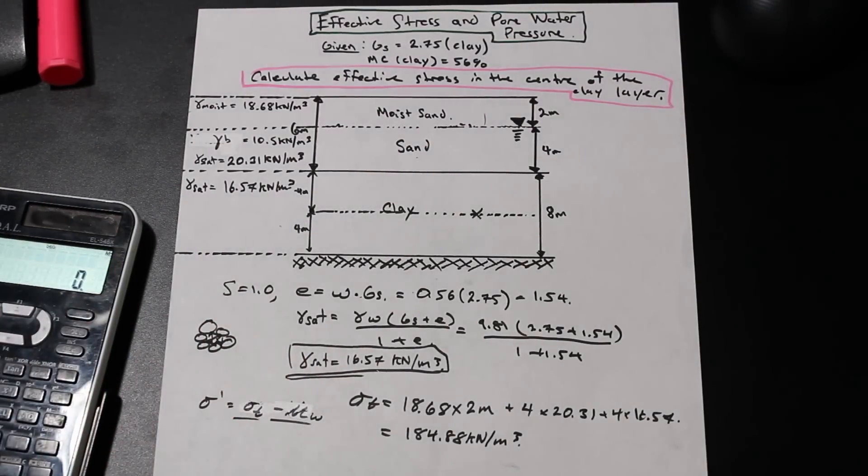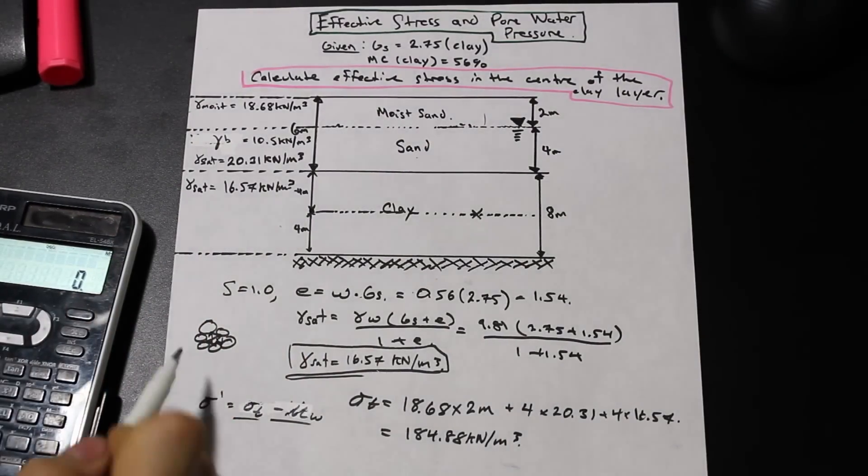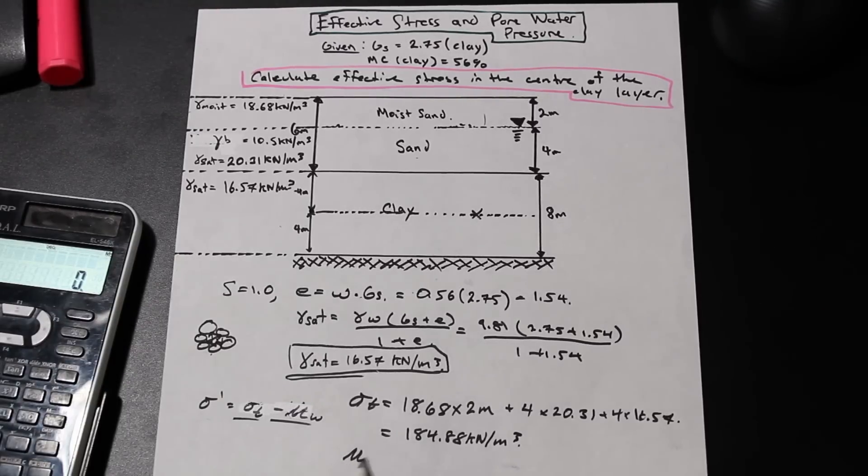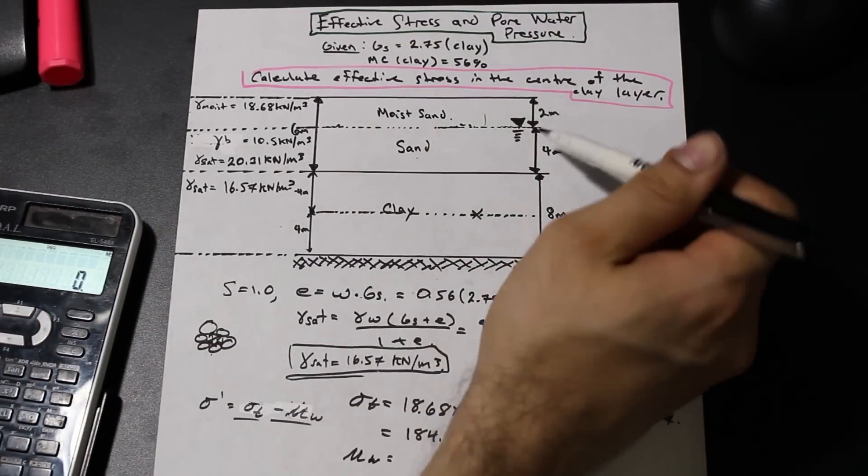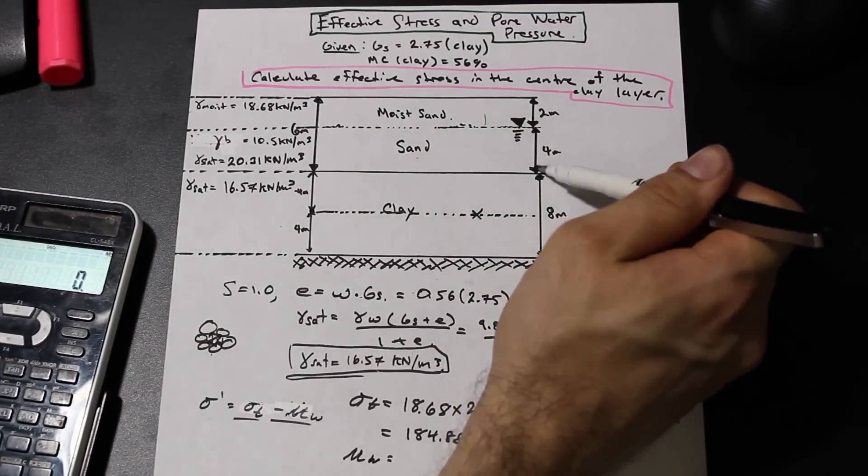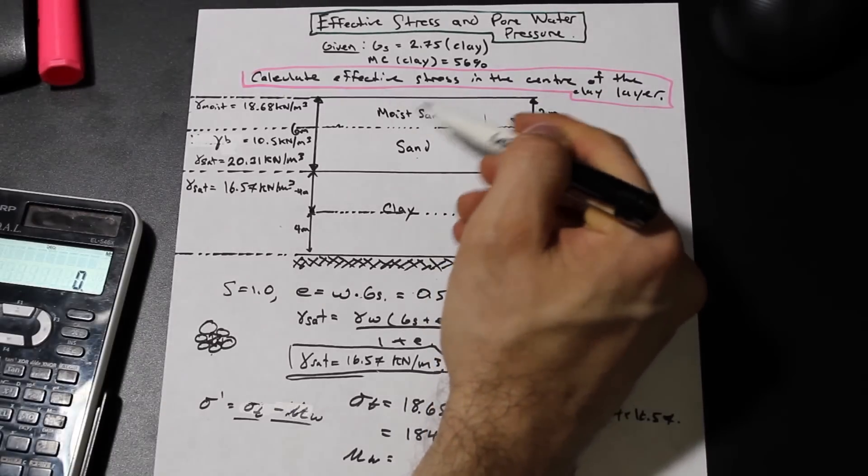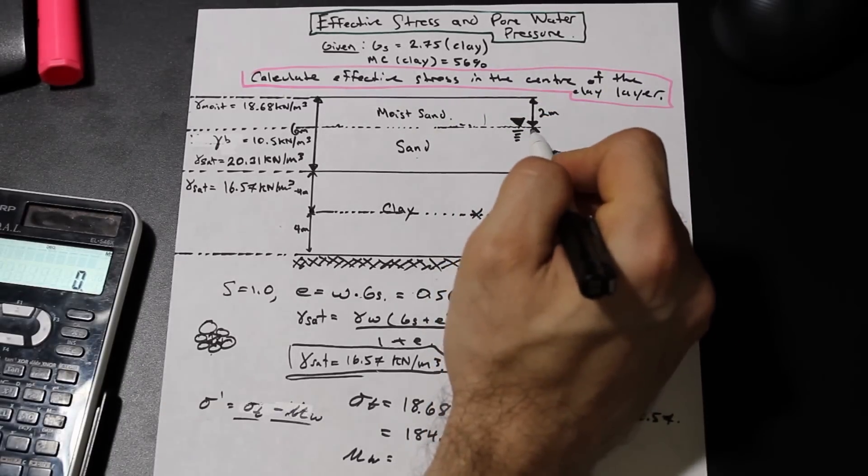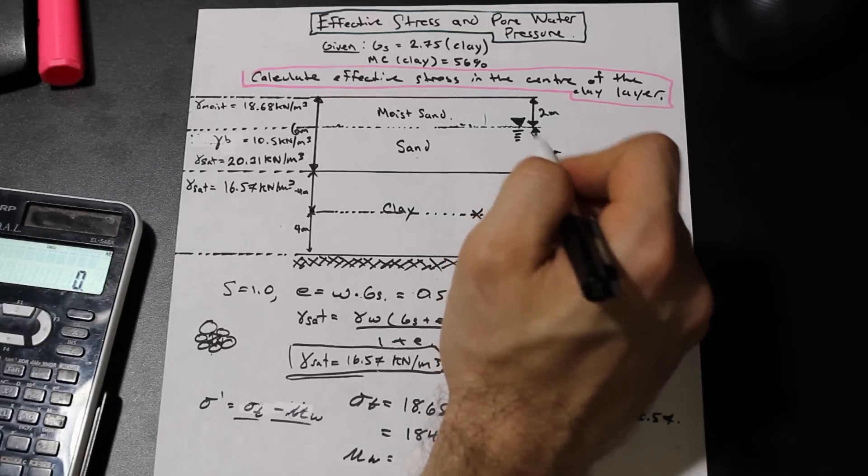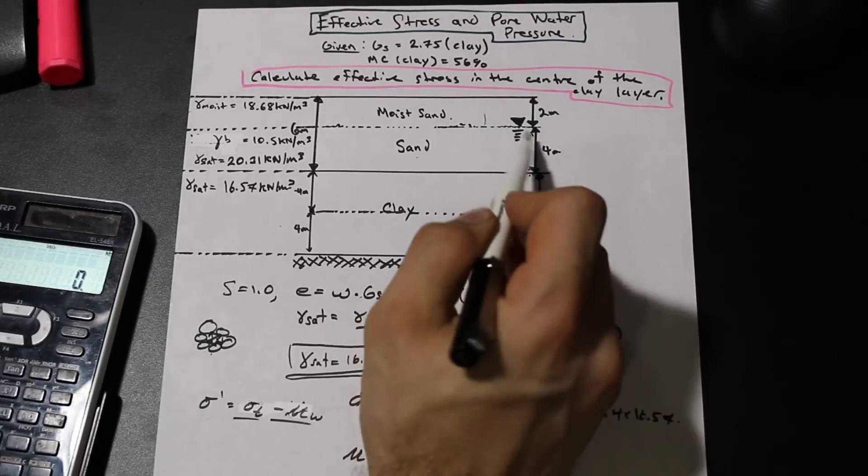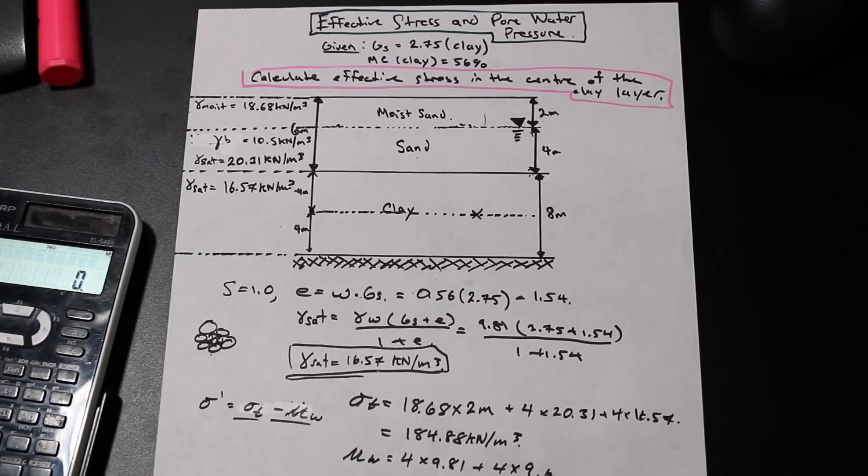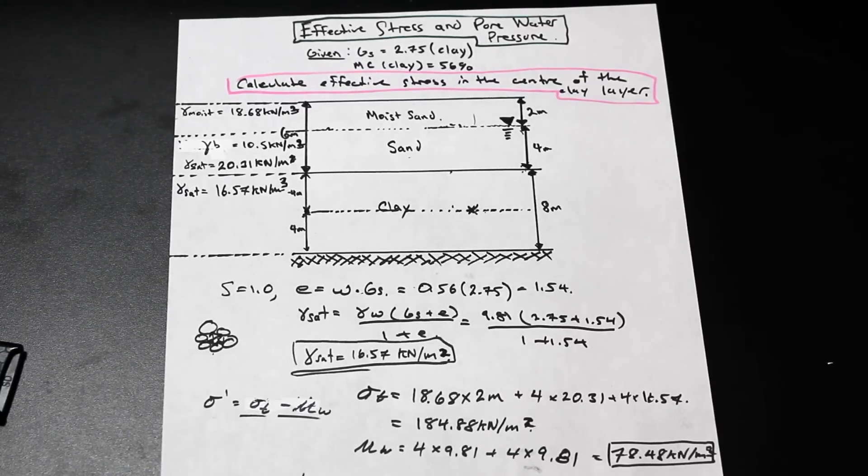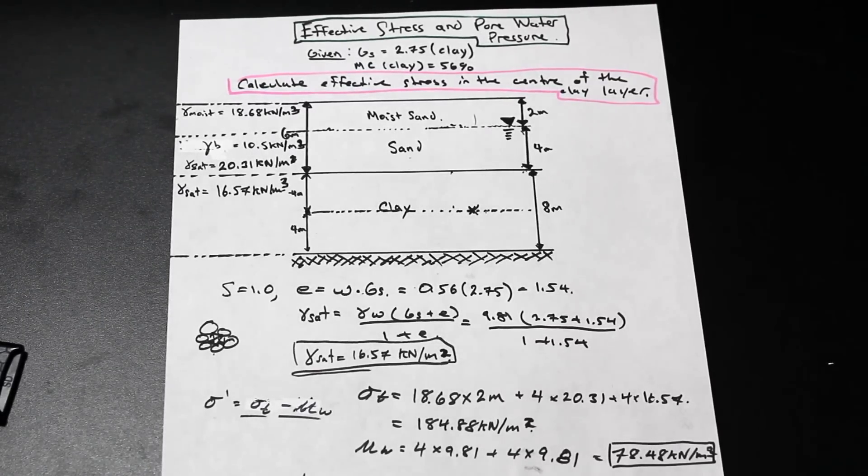Now, we're going to have to subtract the effect that the water has, as I explained before with this diagram. And let's go ahead and calculate that. So we have mu water, and it's just gamma water times the distance of the layer that's below the water table. So there's no saturated area here, so we're not going to include that. But we have a water table here, so we have to subtract. We have 4 right here, starting from here, going down to the sand, times 9.81 plus 4 times 9.81. And so we have 78.48 kilonewton per meter squared. That is mu w.